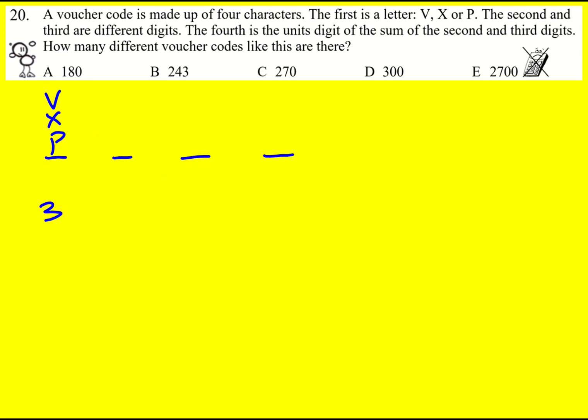We're told that the second one is a digit and they're different digits. Now let me choose the second one first. I can go from zero to nine. There's going to be 10 options.